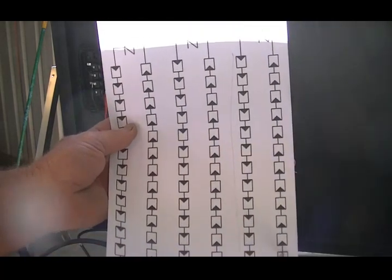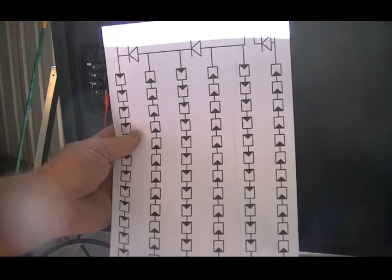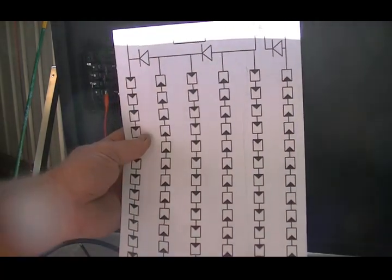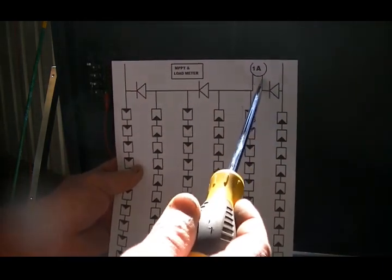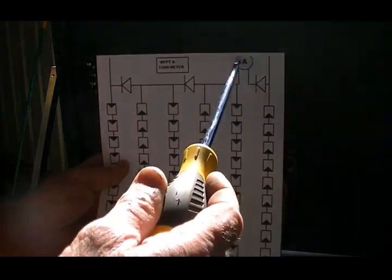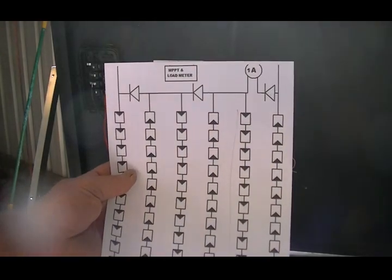Multimeter two is between the first and second string of cells, so we can see how much current is flowing through those two strings and how much current is flowing through our bypass diode when we shade the panel.